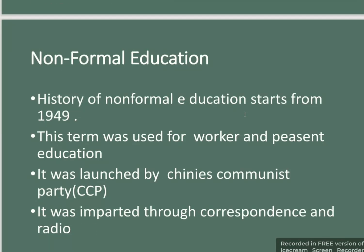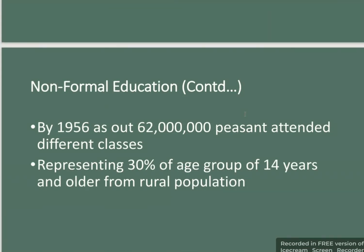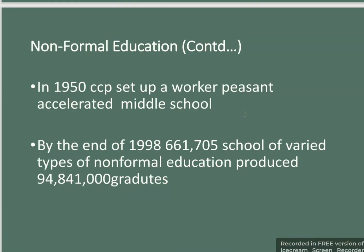The history of non-formal education in China starts from 1949. The term was used for worker and peasant education, launched by the Chinese Communist Party and delivered through correspondence and radio. By 1956, about 62,000 peasants attended different classes, representing 30% of the age group 14 years and older from the rural population. In 1950, the CCP set up worker-peasant accelerated middle schools, and by 1998 various types of non-formal education produced 94,840,000 graduates.